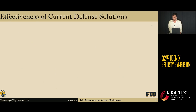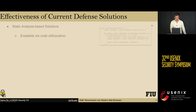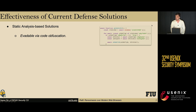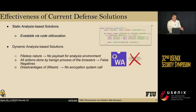We also evaluated the effectiveness of current ransomware defense solutions against this type of threat. Firstly, we have static analysis-based solutions. While these static analysis-based solutions might be useful for different types of ransomware samples, they can be evaded by code obfuscation.